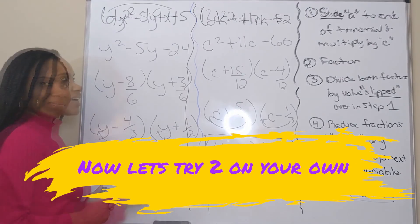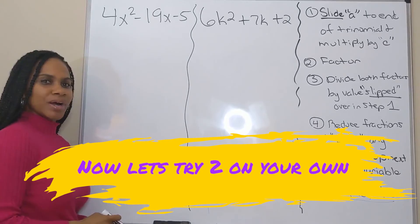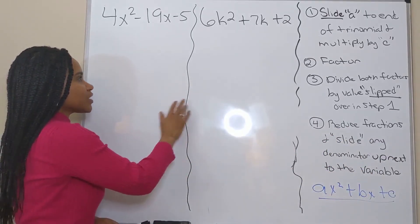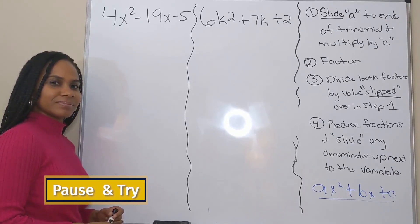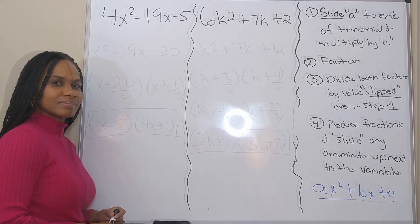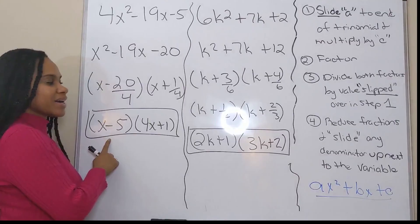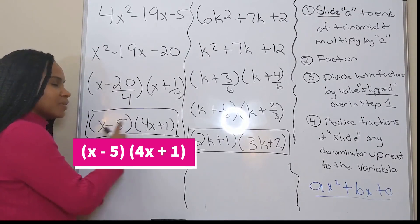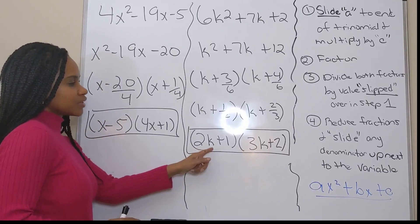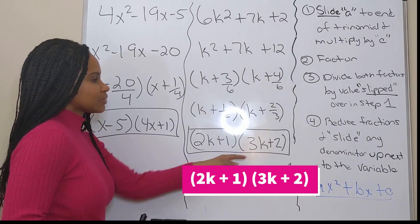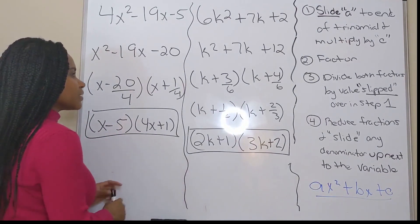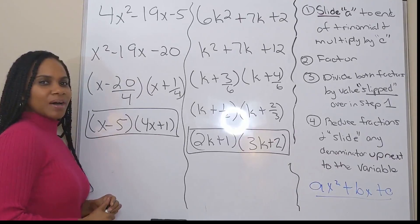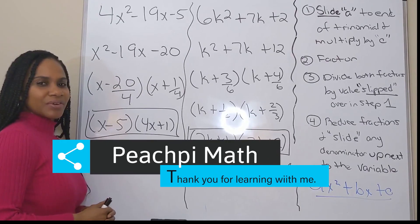All right, so these last two problems, I actually want you to try on your own. So go ahead and pause the video and try to factor these two problems on your own. All right, so you should have gotten x minus 5 times 4x plus 1, or your binomials could be reversed, and 2k plus 1 times 3k plus 2. So I hope you got them correct. If not, maybe pause the video and analyze my work a little bit here. All right, so we've reached the end of our lesson, and I want to thank you for learning with me.